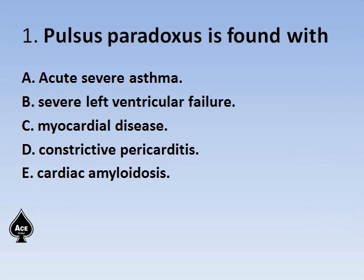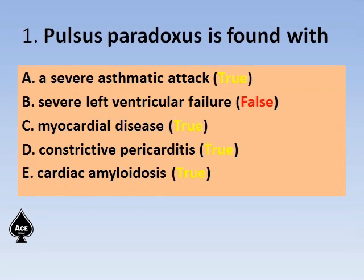Today's question number 1: Pulsus paradoxus is found with acute severe asthma, severe left ventricular failure, myocardial disease, constrictive pericarditis, and cardiac amyloidosis. The true statements are 4 in number; the only false statement is severe left ventricular failure. This can also be framed as a single response question: pulsus paradoxus is seen with all except — and that is the answer. That is why the true/false method is followed in this initial discussion.